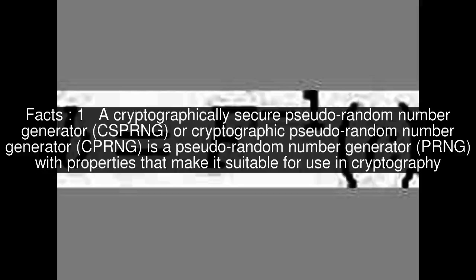A cryptographically secure pseudorandom number generator, CSPRNG, or cryptographic pseudorandom number generator, CPRNG, is a pseudorandom number generator, PRNG, with properties that make it suitable for use in cryptography.